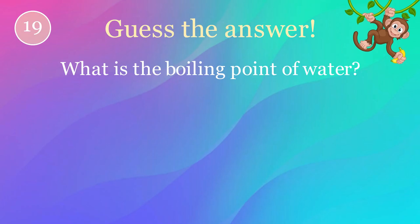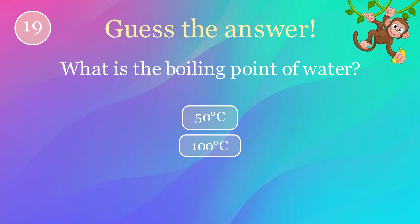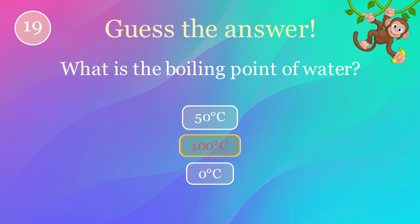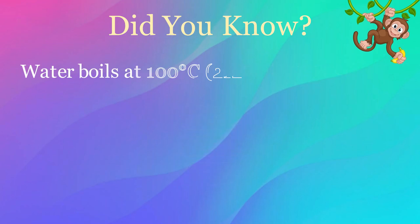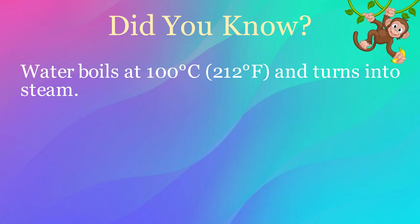What is the boiling point of water? Options: 50 degrees Celsius, 100 degrees Celsius, 0 degrees Celsius. The correct answer is 100 degrees Celsius. Here's an interesting fact: water boils at 100 degrees Celsius (212 degrees Fahrenheit) and turns into steam.